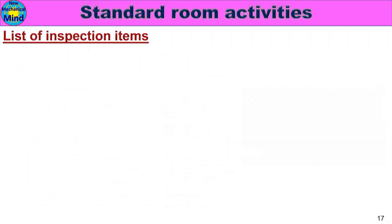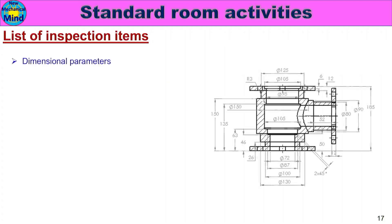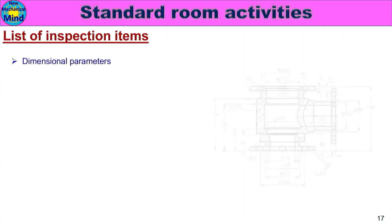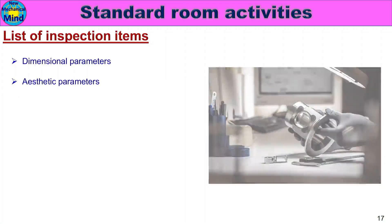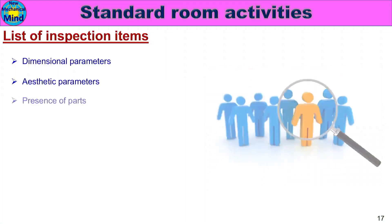Let's look at the list of inspection items. Dimensional parameters — parts dimensions. Aesthetic parameters — parts visual appearance, such as color. These are aesthetic parameters.